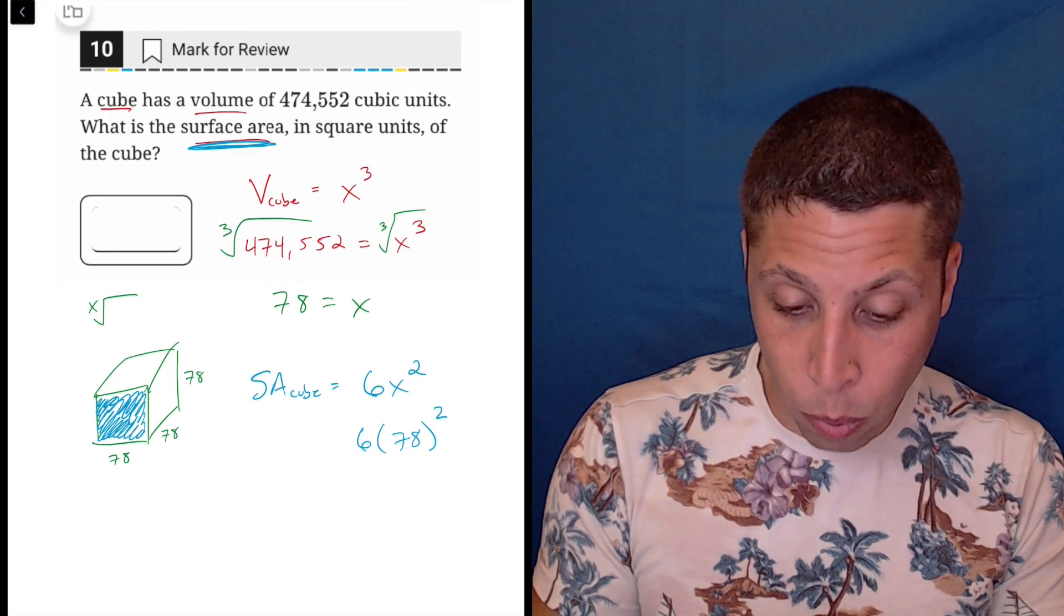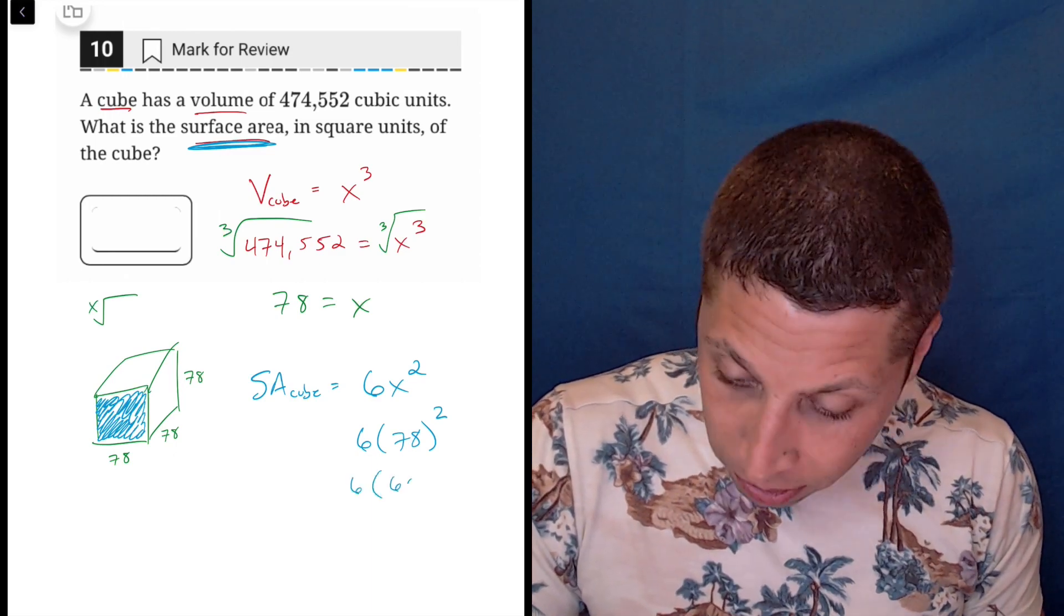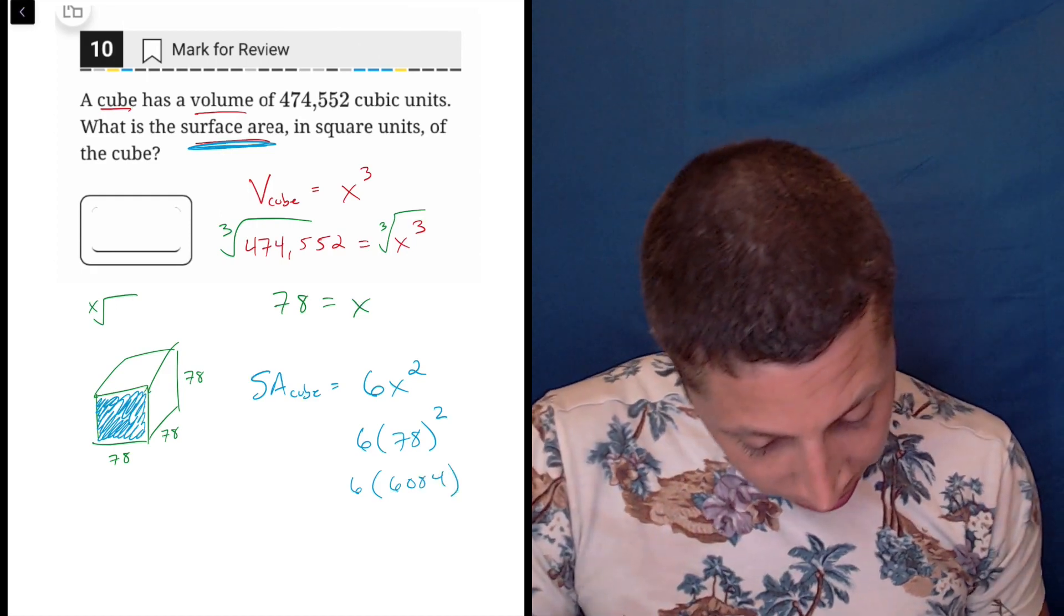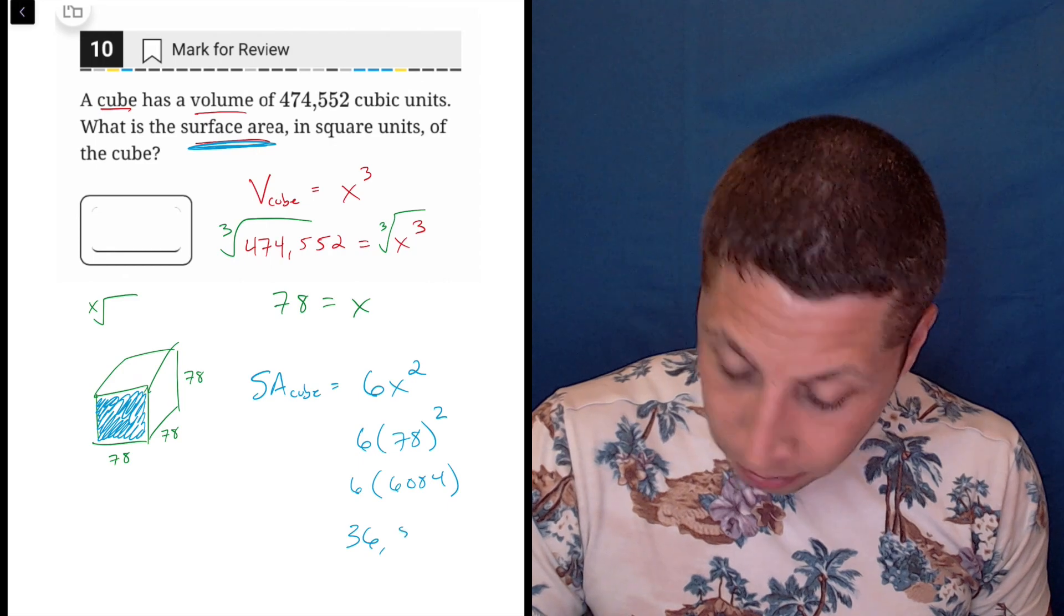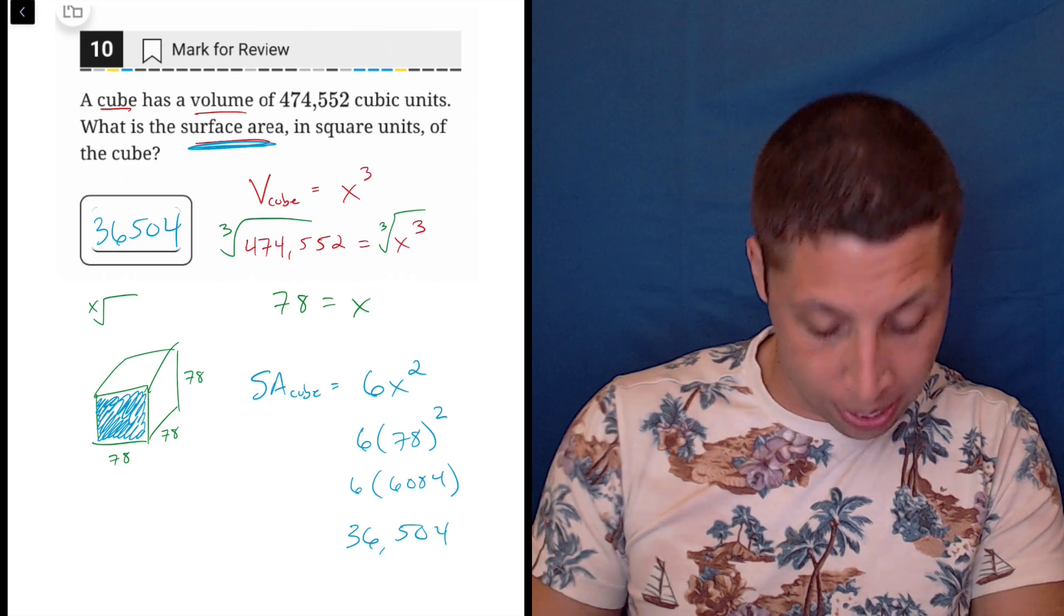So that's 6 times 78 squared, and once again I'm getting my calculator. 78 squared is 6084, so 6 times 6084 is a crazy number: 36,504. So 36,504 is the answer.